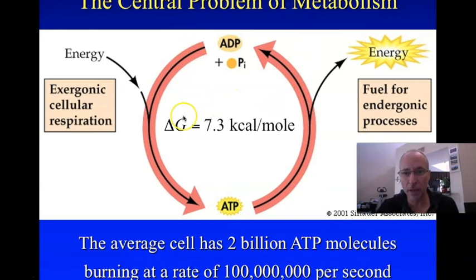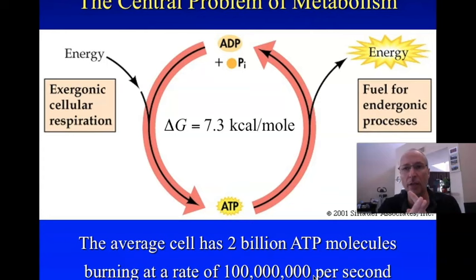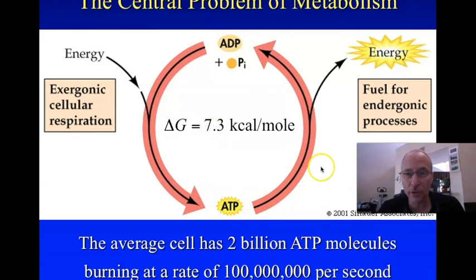Here's the problem: the average cell only has about 2 billion ATP in it, but at rest it's burning ATP at a rate of 100 million per second. If you have 2 billion and you're burning at 100 million per second, each cell would run out of ATP in 20 seconds. And if you run out of ATP, that cell is going to die. So you've got to take all the ADP and free phosphate released when you burn the ATP and bring it back into ATP. How much energy does that take? The exact opposite in sign but the same amount — 7.3 kilocalories per mole to make a mole of ATP. So where do we get that?